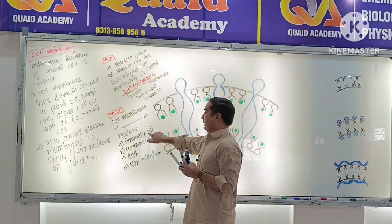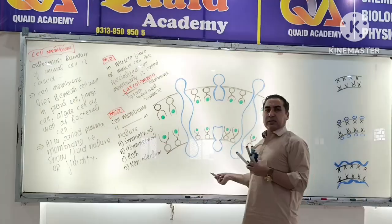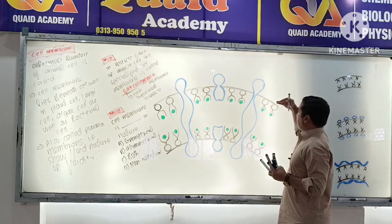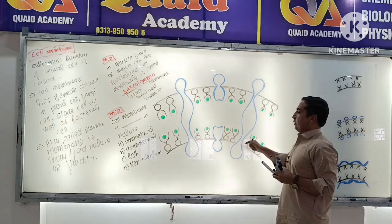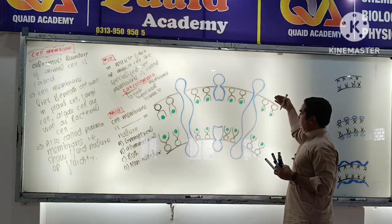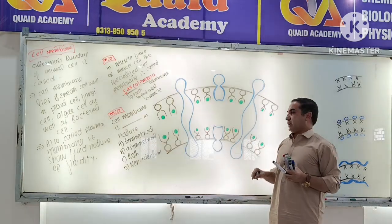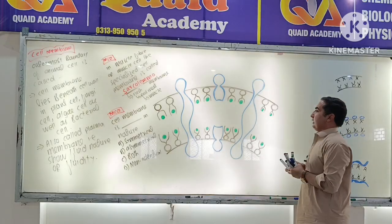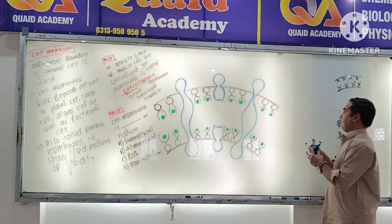The next MCQ: the plasma membrane is asymmetrical or non-identical. The correct option is the plasma membrane is asymmetrical or non-identical.